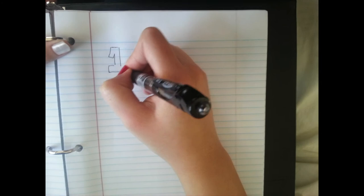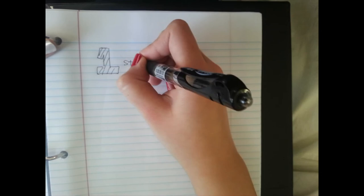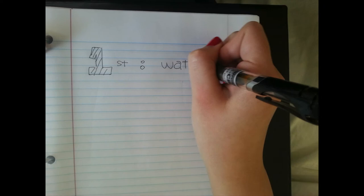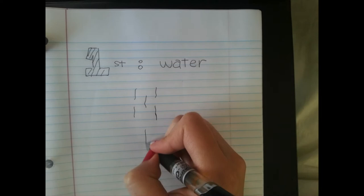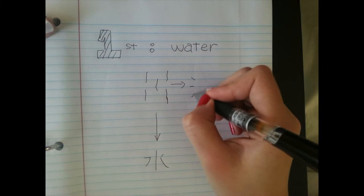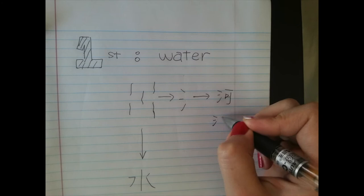So let's talk about water first. Ancient Chinese people drew simple pictures like streams to represent the word water. And hundreds of years later, people write 水 instead of those streams. And it also changes into three drops of water, and it also means water, but it's used as a part of the character.